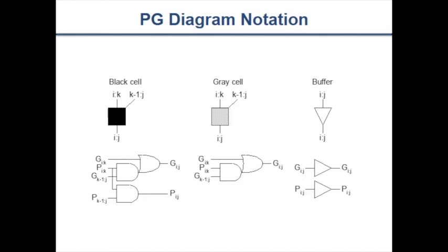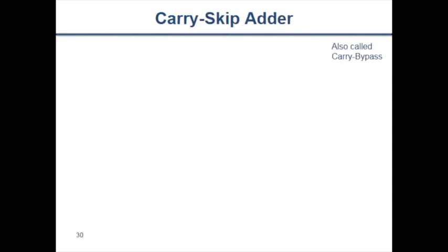In the carry skip or carry bypass adder, the basic idea is: if all propagate signals P3 through P0 are equal to 1, then C_in propagates directly to C_out. We can pre-compute this condition to speed things up. So we compute P and G for all bits in parallel, feed them into a full adder network, and add a mux at the output: if P3-to-0 all equal 1 (checked via a 4-input AND gate), we skip C_in directly to C_out_3, saving time for the next stage.